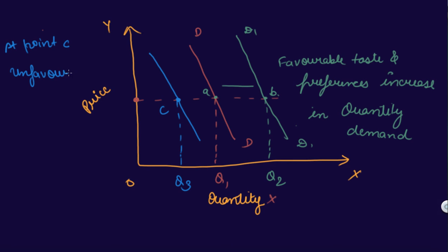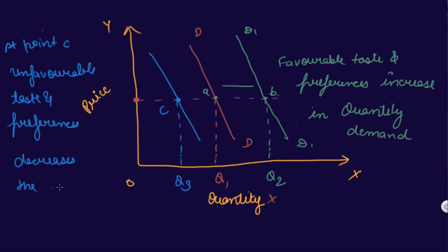So unfavourable taste and preferences reduce the quantity demanded. This is how your taste and preferences affect the quantity demanded of a commodity.